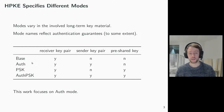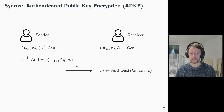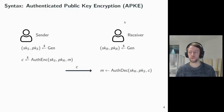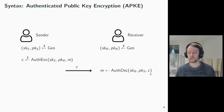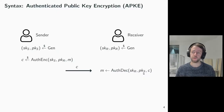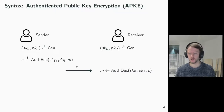Thus our object of analysis is an authenticated public key encryption scheme, or short APKE. Let's take a look at the syntax of APKE. We have two roles, a sender and a receiver, and both of them need a long-term key pair identified by S or R in the subscript. Encryption takes a sender secret key, a receiver public key and a message and returns a ciphertext. This ciphertext is consumed by the authenticated decryption function alongside a receiver secret key and a sender public key. This might remind you of sign encryption literature, and I mention that again one other time.